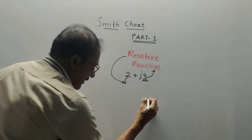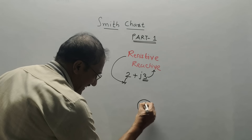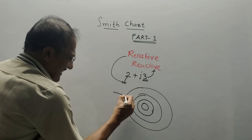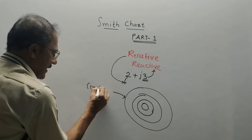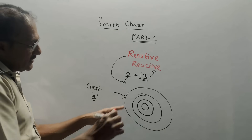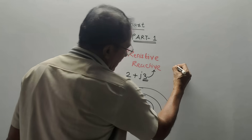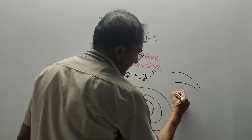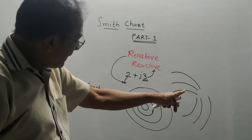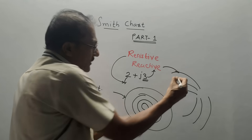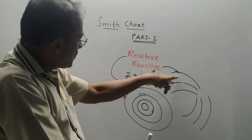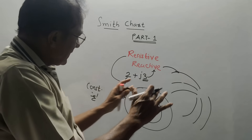On the Smith Chart there are two types of circles. One type consists of normal complete circles — there are n number of these marked on the chart. These circles are known as constant R circles, where R represents the resistive part. There are also different arcs on the same chart. These arcs represent the reactive component.